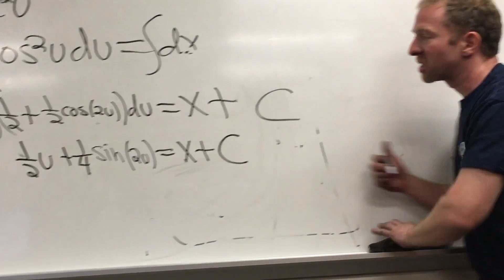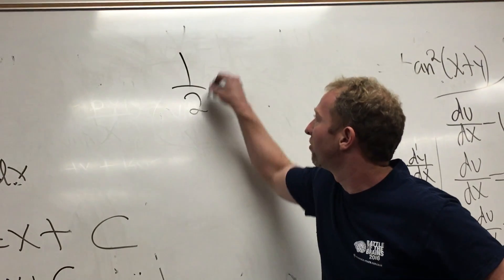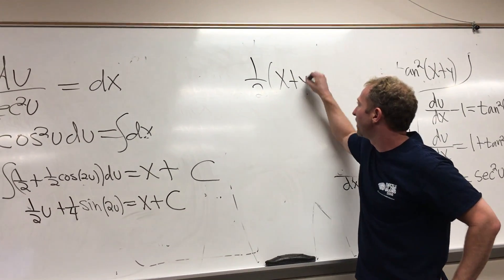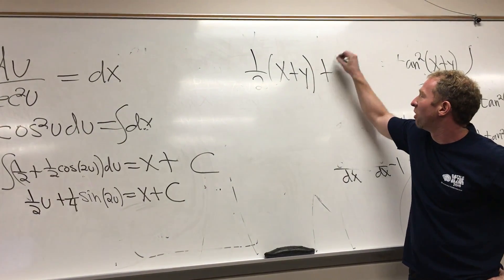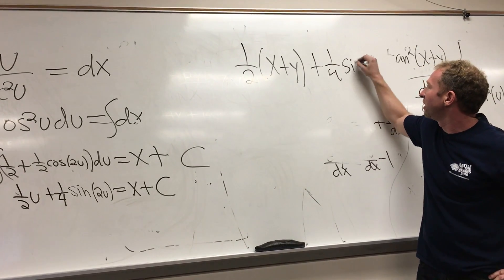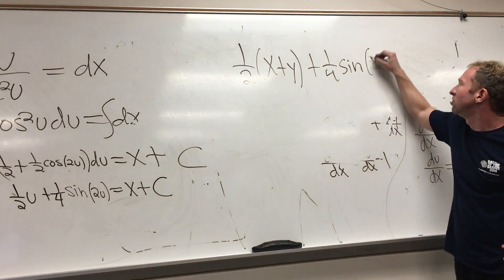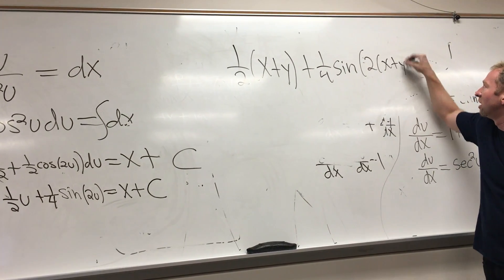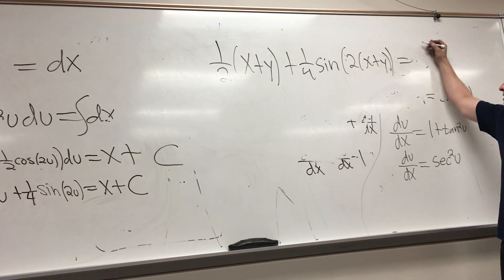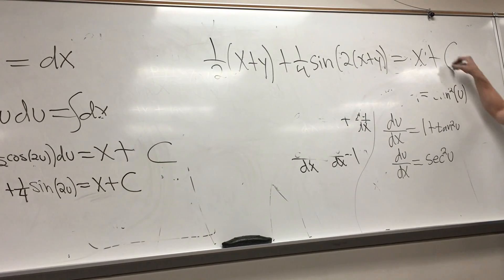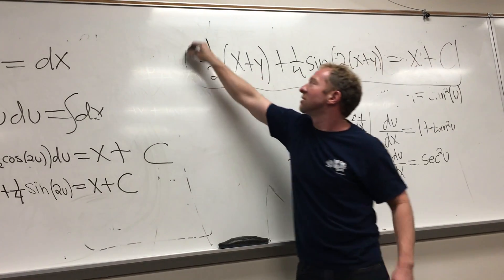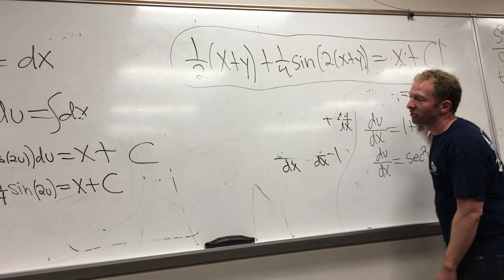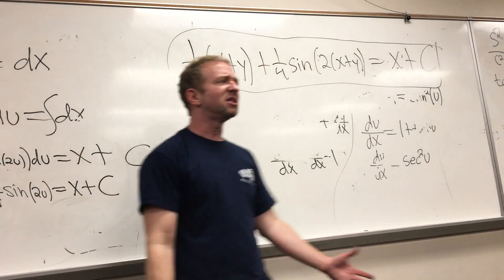So replacing u with x plus y, we get 1 half of x plus y plus 1 fourth sine of 2 times x plus y equals x plus c. Wow. So not too bad compared to the Bernoulli's. It's a lot easier.